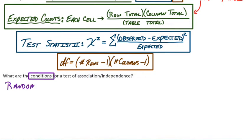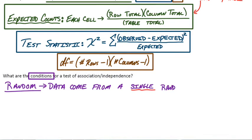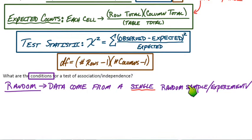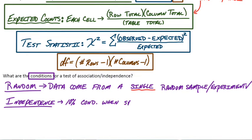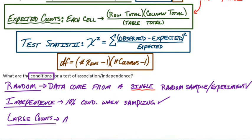What are the conditions? The main thing to emphasize is that the randomness condition is different from the homogeneity test: for independence, the data come from one single overall random sample or randomized experiment. For homogeneity, the randomness condition said the two or more samples taken each have to be random. The independence condition uses the 10% condition when sampling from a larger population. And for the large counts condition, we still need all expected counts to be at least five.